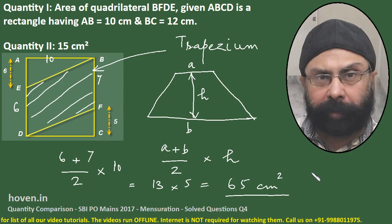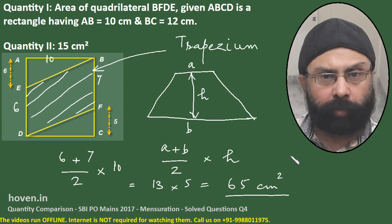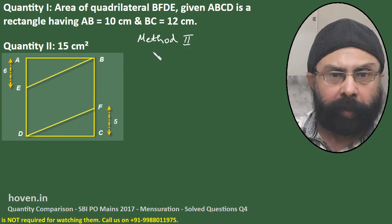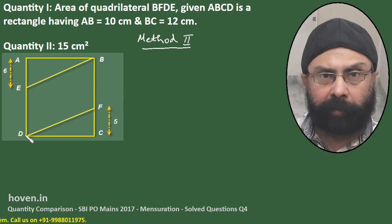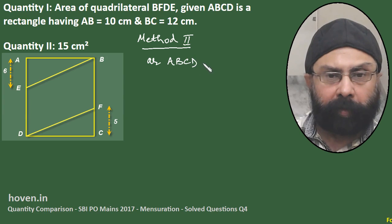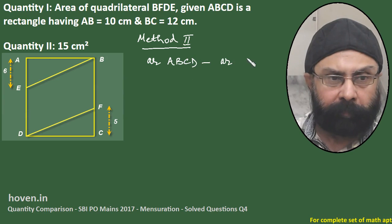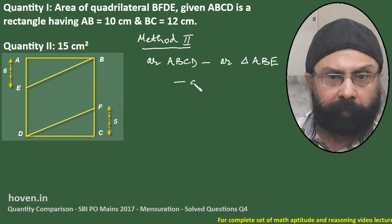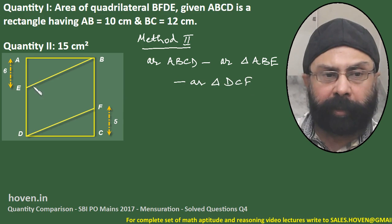This is the shorter method. Another alternative, a bit longer, was also possible. Let us take that also — Method 2. This will be a bit longer: the entire rectangle area ABCD minus two triangles, and the balance will be the required area.